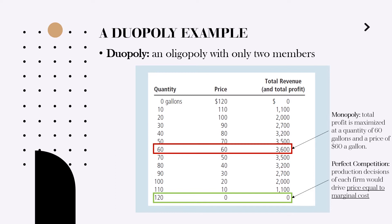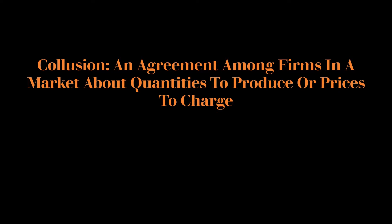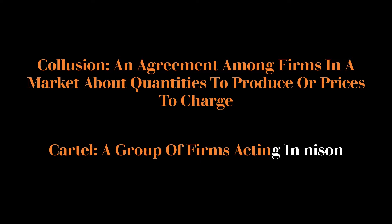Now let us try to understand what will happen if this market is a duopoly. One case is if two companies make an agreement and behave similarly to a monopoly. This agreement is called collusion — an agreement among firms in a market about quantities to produce or prices to charge. The companies which enter into collusion are called a cartel. However, collusion is illegal in many countries, including the United States, where it is controlled by strict antitrust laws.